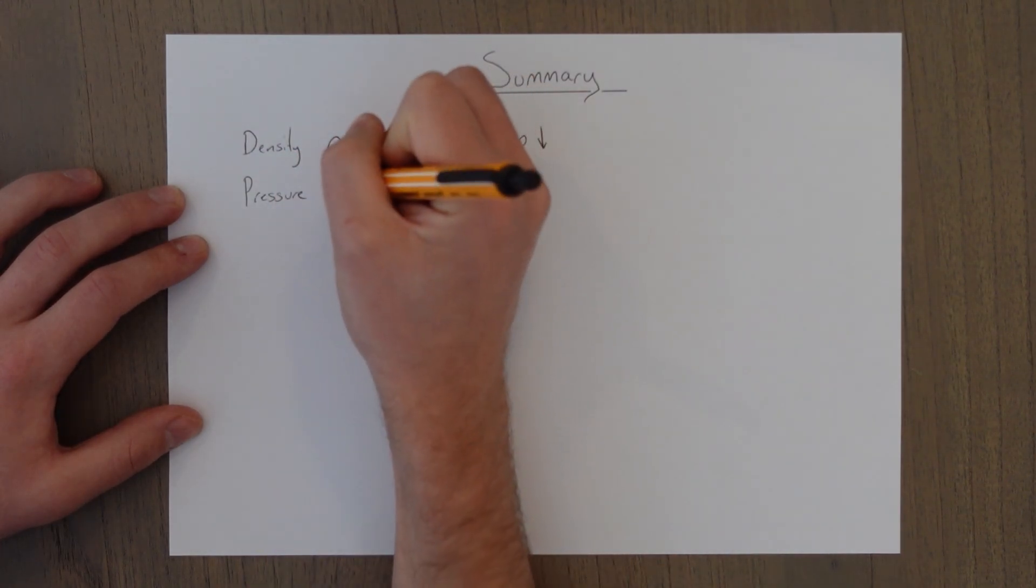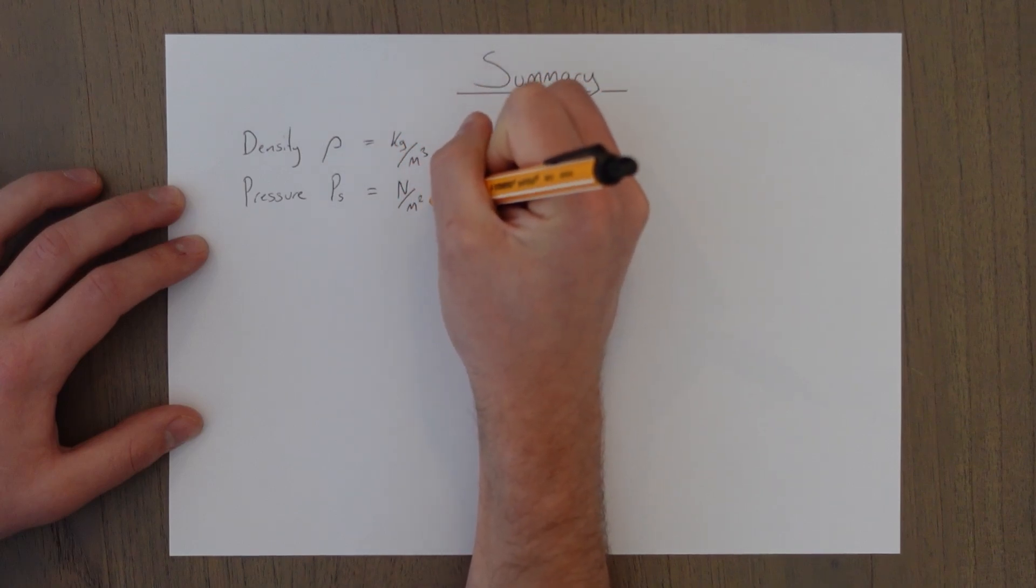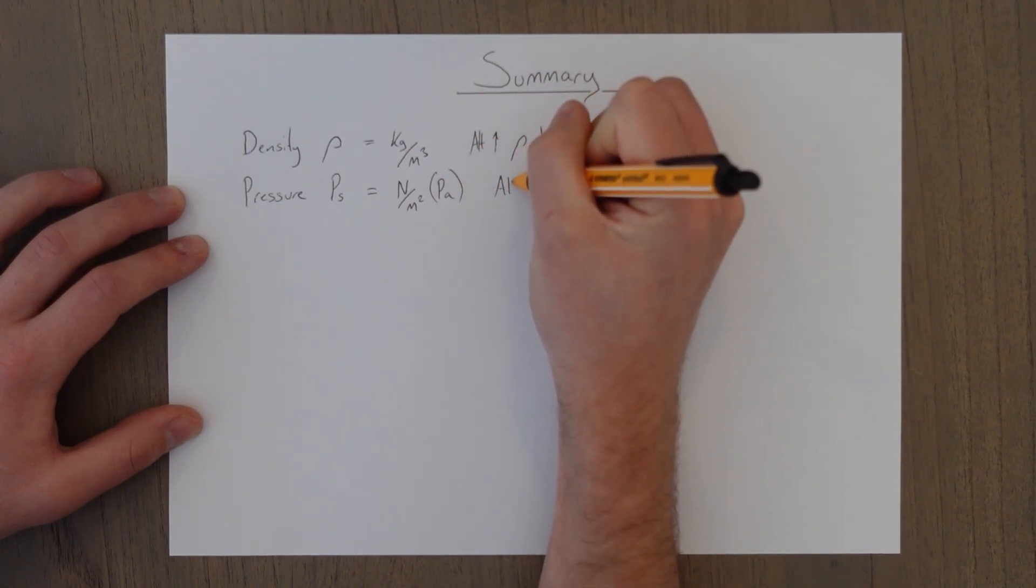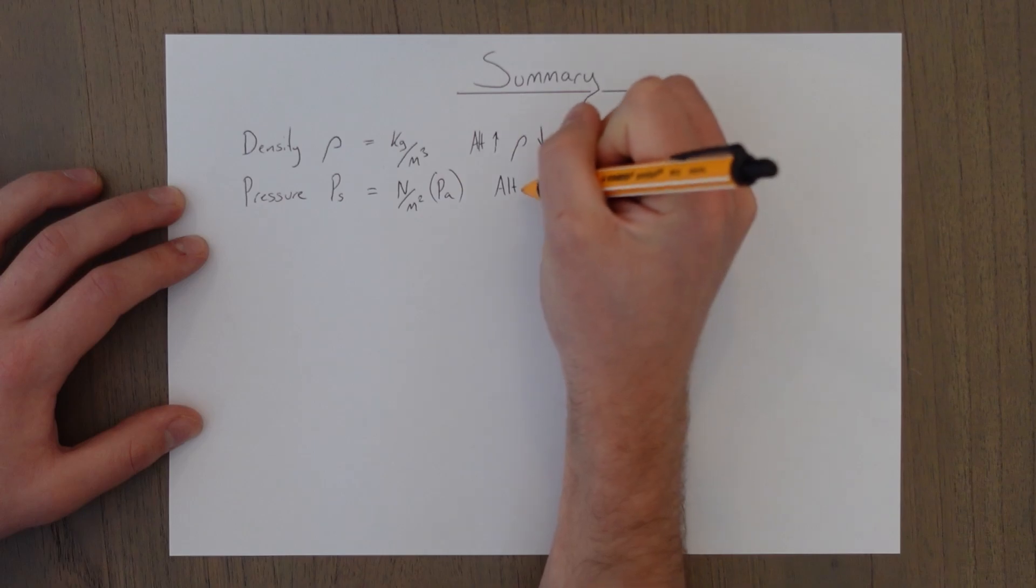Next, we have pressure, PS. And it is newtons per meter squared or pascals. It also reduces as altitude increases.